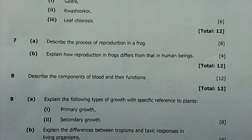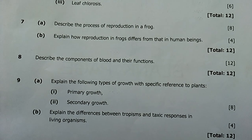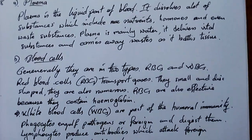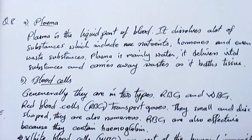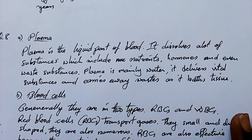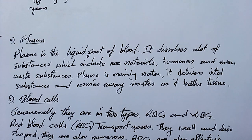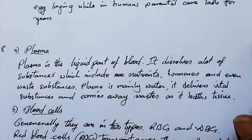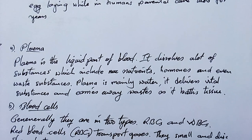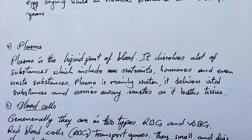Question 8: describe the components of blood and their functions — 12 solid marks. The three major components of blood are plasma, blood cells, and platelets. Plasma is the liquid part of blood. It dissolves many substances including nutrients, hormones, and waste products. Plasma is mainly water — about 90% — and it delivers vital substances and carries away waste as it bathes tissue.